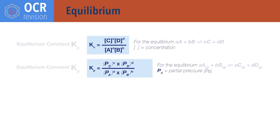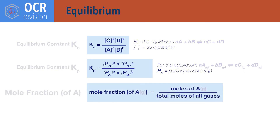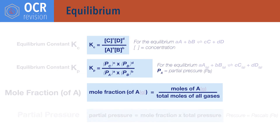Kp equals partial pressure of products times each other divided by partial pressures of reactants times each other, each raised to the power of their molar ratio in the balanced reaction equation. Kp is the equilibrium constant for gases based on partial pressures. Partial pressures have the units of Pa (pascals). Mole fraction of a gas equals the moles of that gas in the system divided by the total moles of all gas in the system. Partial pressure of a gas equals its mole fraction times the total pressure, where pressure is in Pa.